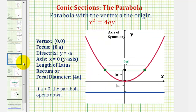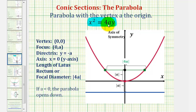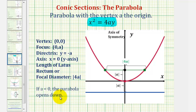Let's start with a quick review. If we have the equation of a parabola that fits this form here, notice how the x term is squared and the y term is to the first power. The parabola will have its vertex at the origin and will open up or down based upon the sign of a. If a is less than zero or negative, the parabola opens down. If a is positive or greater than zero, the parabola opens up.